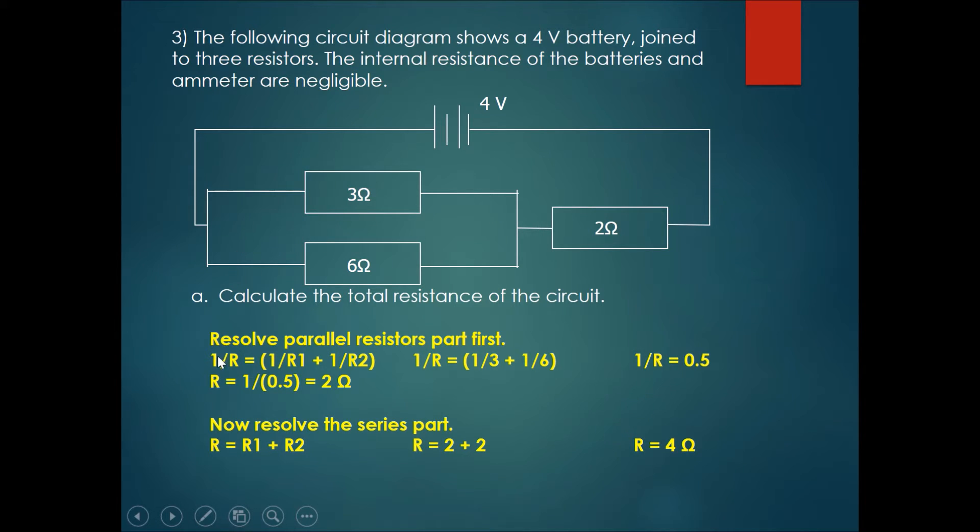The way to do that is 1 over R total equals 1 over R1 plus 1 over R2. So 1 over R will be equals to 1 over 3 plus 1 over 6.